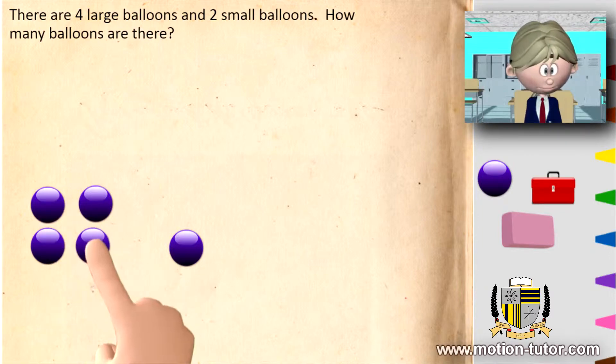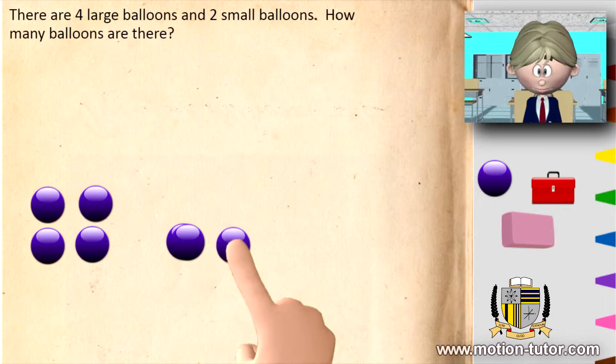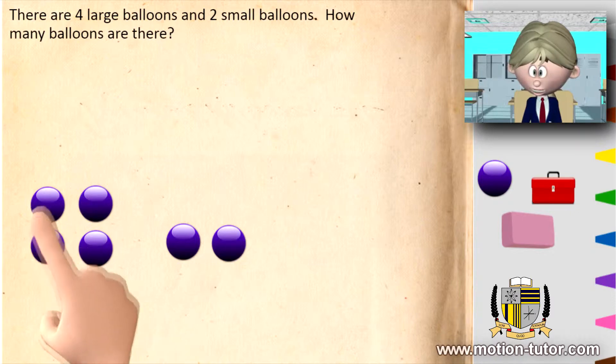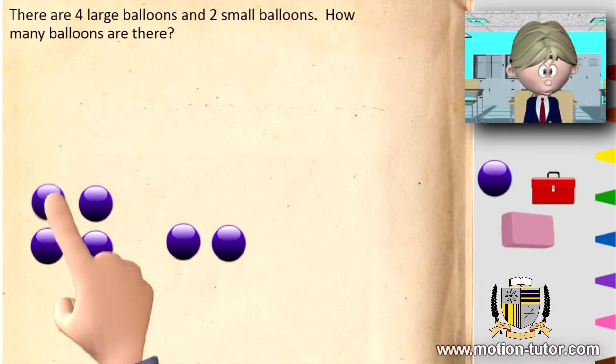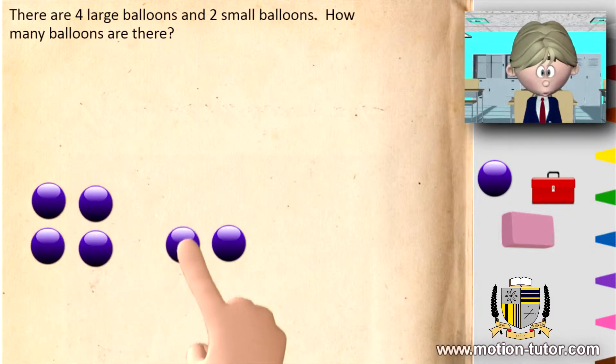One, two, three, four, and one, two. So these four will represent the four large, and then these two will represent the two small balloons.